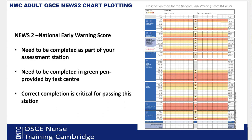The chart needs to be completed in green pen — they provide a green pen at the exam centre, so you don't need to bring one. Correct completion is critical for passing this station. The majority of fails in the assessment station are because of charting errors on the NEWS chart. There is no room for error; it must be 100% correct.